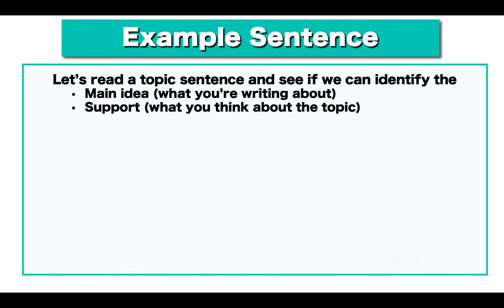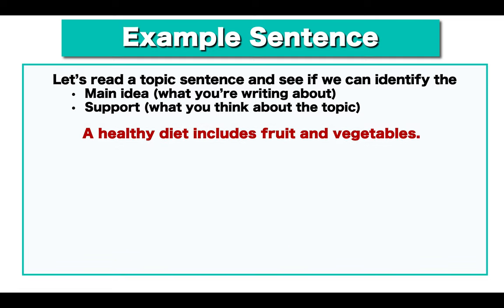Example sentence. Let's read a topic sentence and see if we can identify the main idea — what you're writing about — and support — what you think about the topic. So this is our example: 'A healthy diet includes fruit and vegetables.' What is the main idea? That's right — healthy diet. What about the support? Fruit and vegetables.